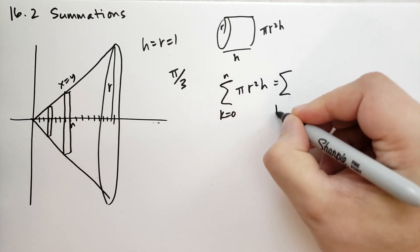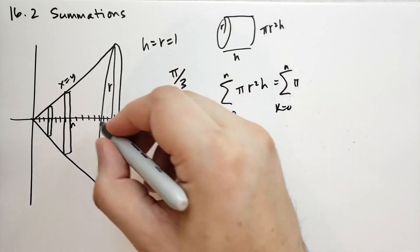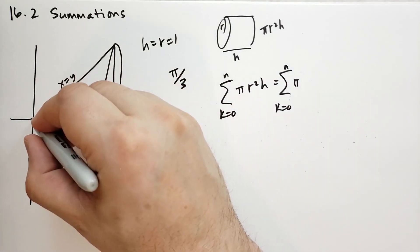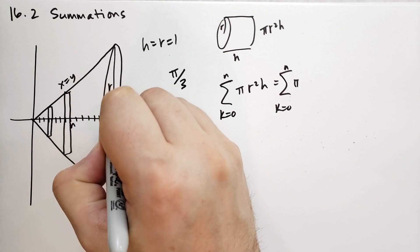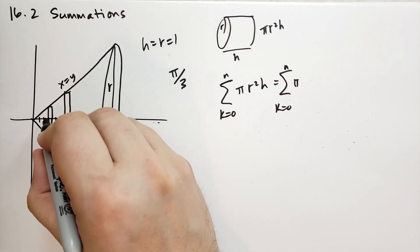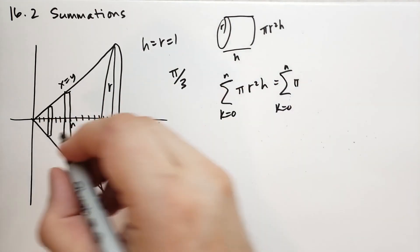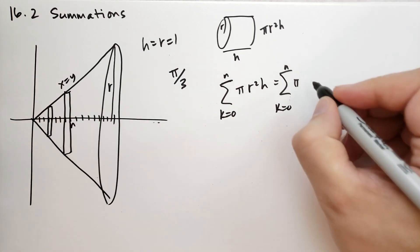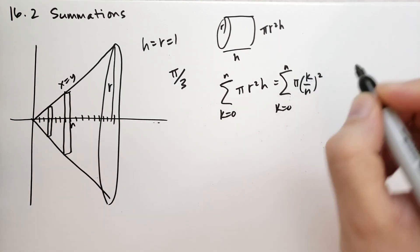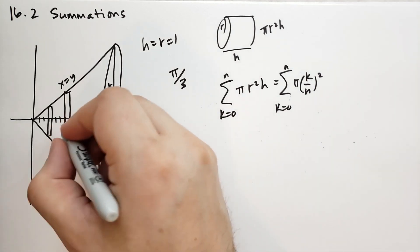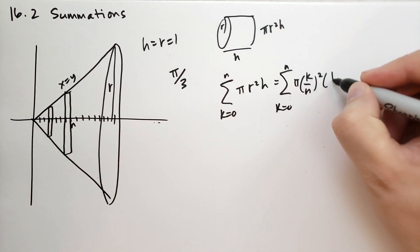The volume of each disk is pi r squared h, which is equal to the sum from k equals 0 to n of pi times r squared times h. What's the r? The r at position k — we're going from 0 all the way up to n — so the radius is just the distance k over n. And we're squaring that. Then the height of each slice, the width of each disk, is just 1 over n.